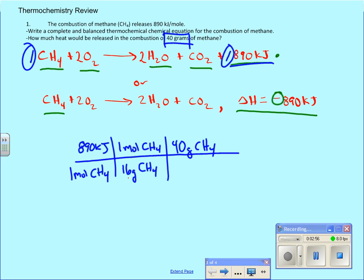So we'll look at the dimensional analysis. Grams of methane cancels grams of methane. Mole of methane cancels mole of methane. And our answer will be in kilojoules. So I've carried that out mathematically. We should get 2,225 kilojoules of energy will be released when we combust 40 grams of methane.